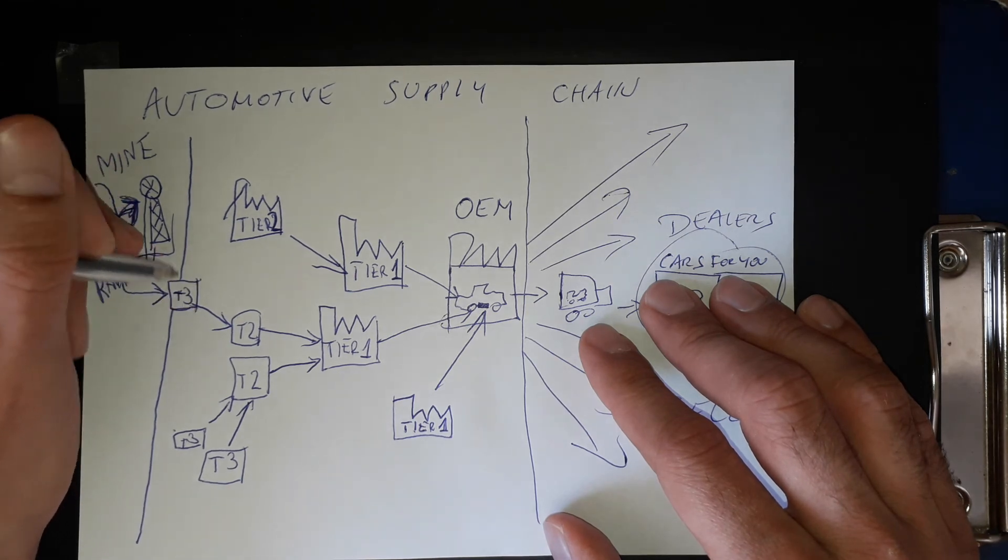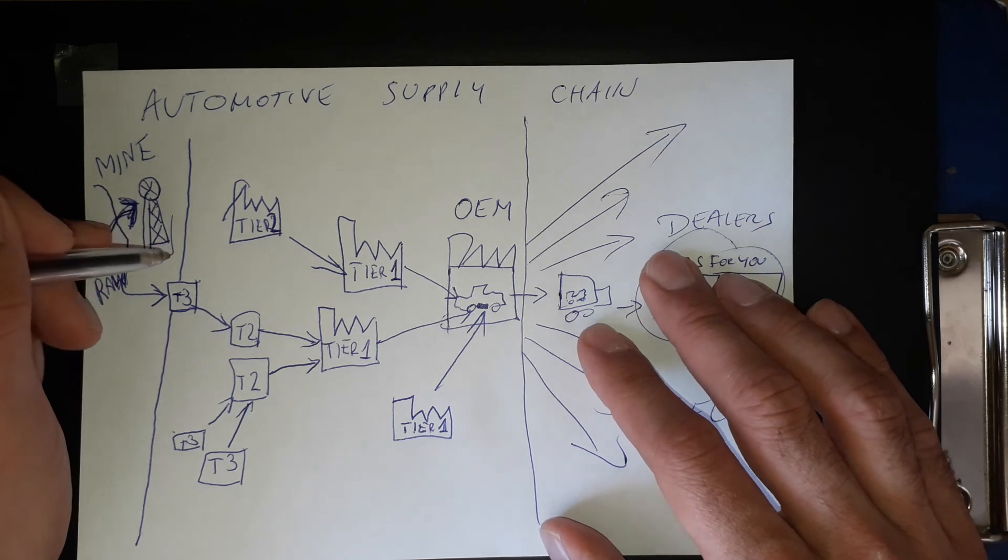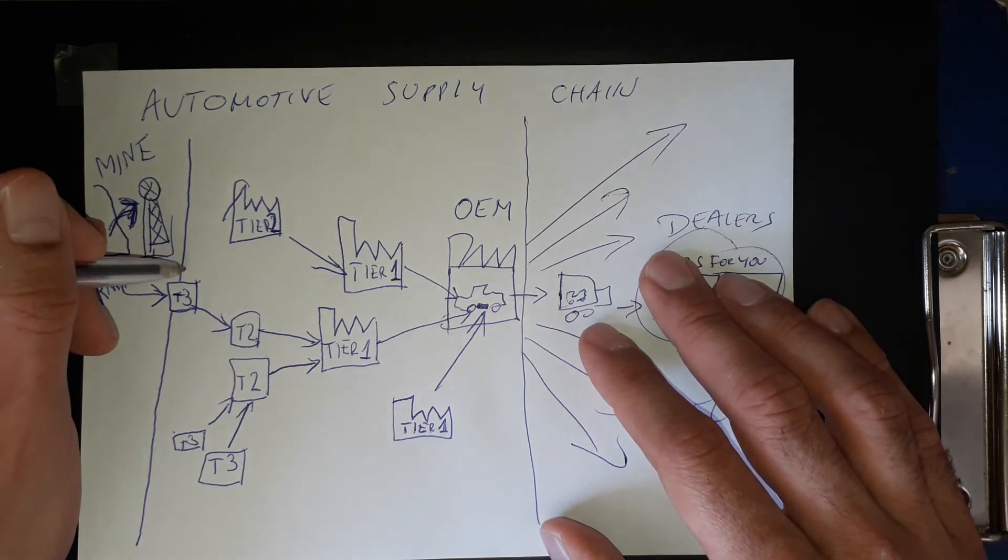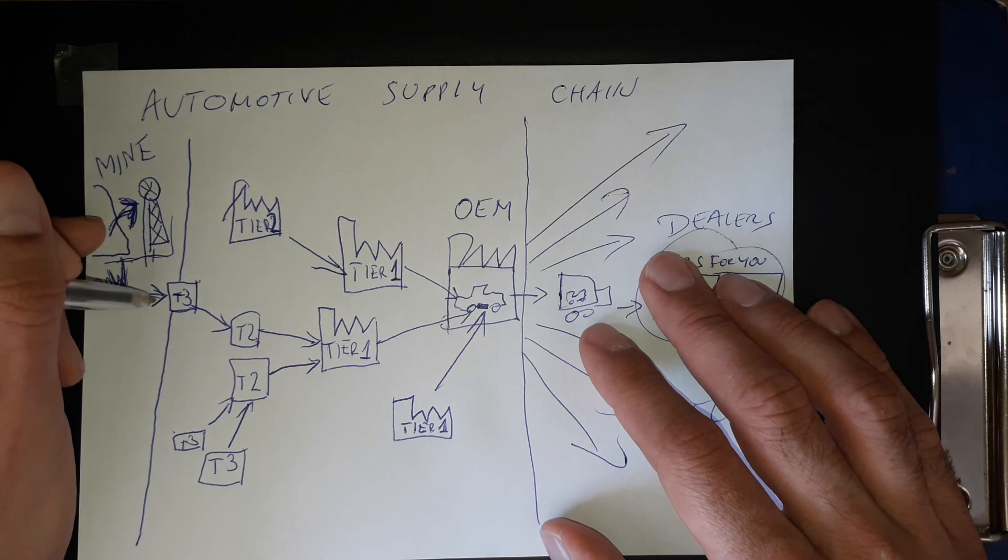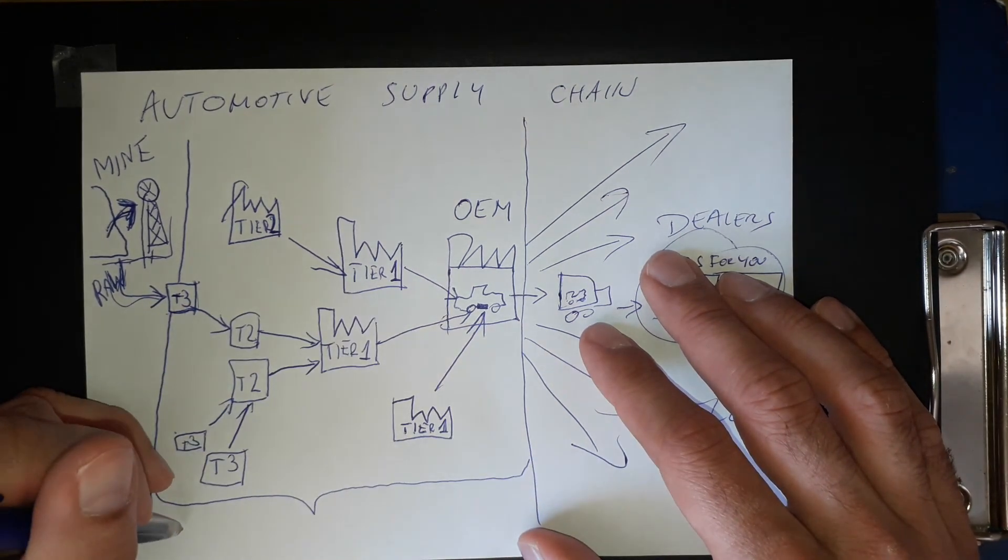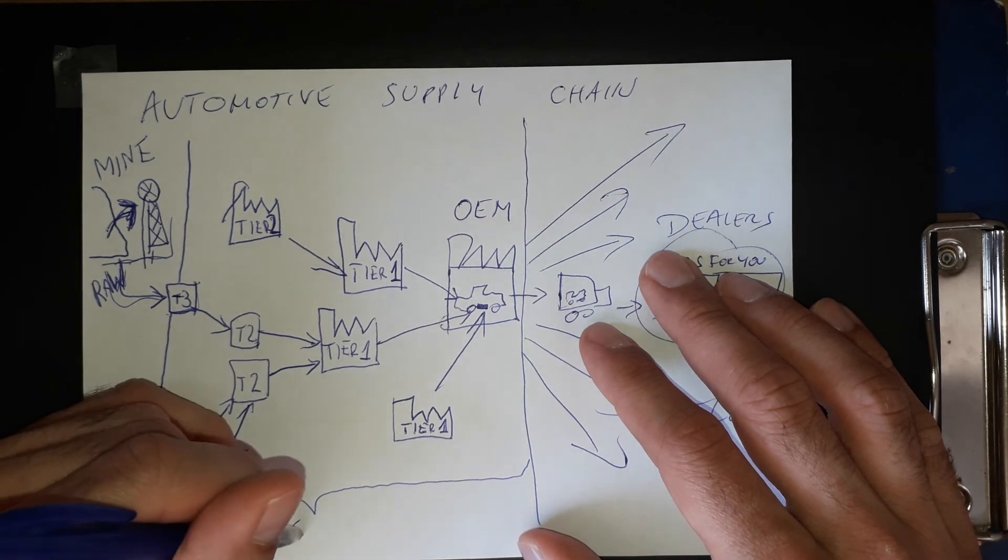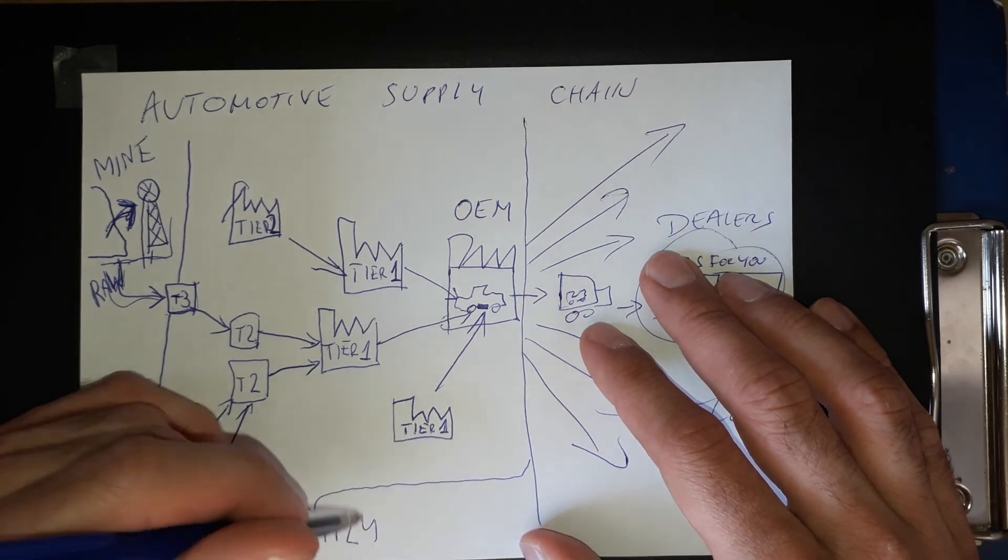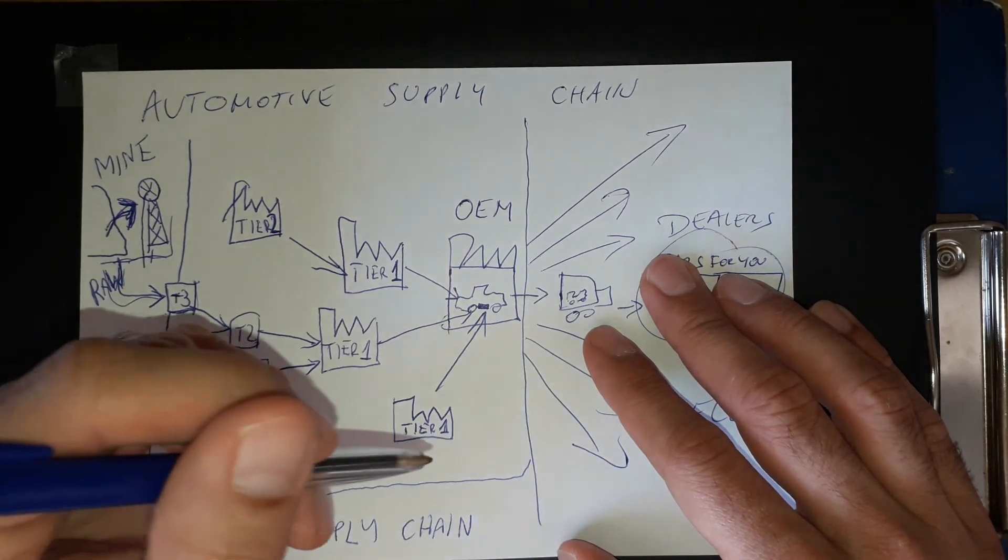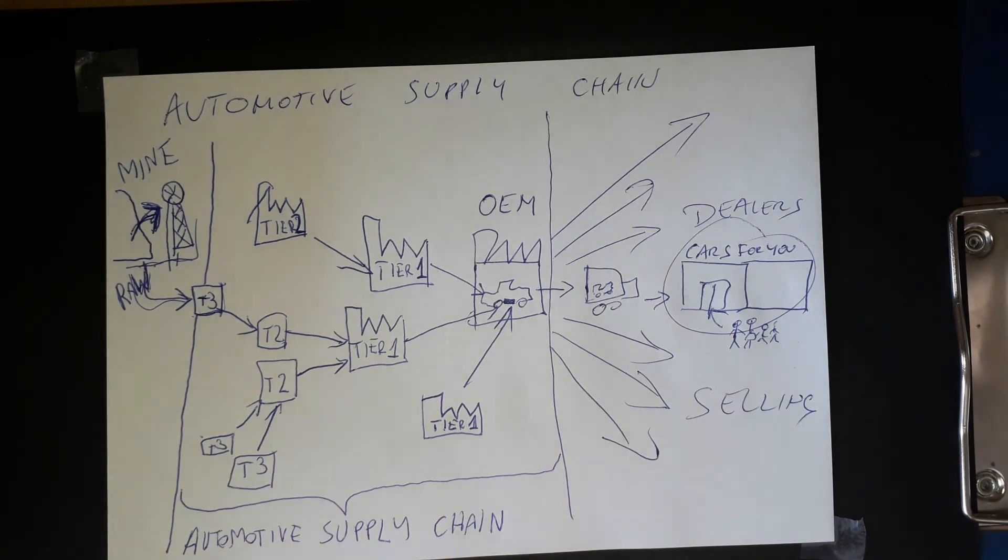Supply chain starts when here is the first manufacturing tier. For example, tier three is making some metal plates from the raw material, and this starts to be the supply chain. So this here is the automotive supply chain.